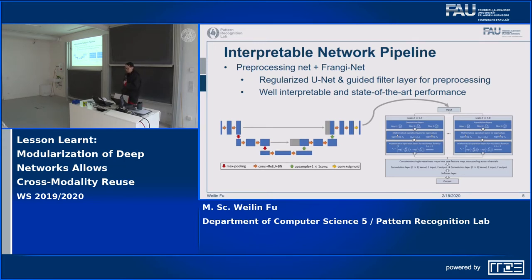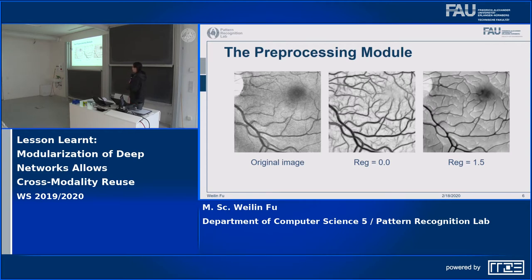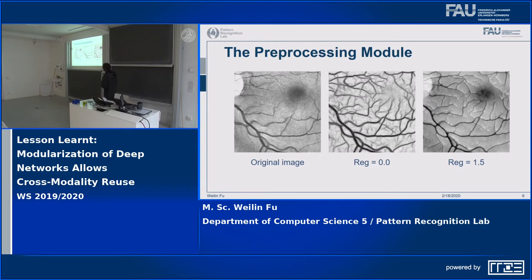Today we want to focus on the modularization of networks, specifically the U-Net preprocessing module. Looking at preprocessing results on fundus images: here we have the original image, and without a regularizer we get something that is basically a vessel segmentation already, without background or inhomogeneous illumination. But if we add an L2 regularizer to both ends of the U-Net, what we get is a picture that resembles the original image — with low-frequency information removed, a very smooth background, and edges preserved. It seems the U-Net is trained to be an edge-preserving denoising filter.